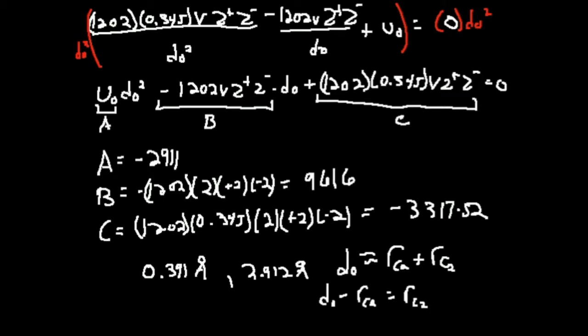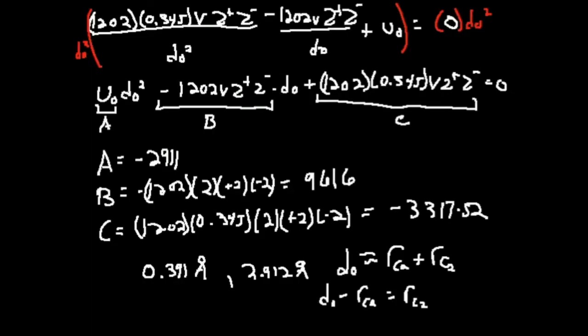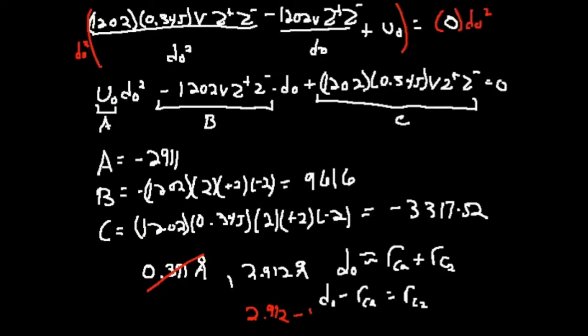Now, if my D0 was 0.391, I would be subtracting off 1.14, and I would get a negative value for this radius, which is impossible, which means that this is not a solution to this problem, meaning I'm going to use 2.912. So that means I'm going to take the thermodynamic radius, 2.912, and now subtract the radius of calcium 1.14, and that's going to give me my radius of C2. So 2.912 minus 1.14, and I get that this is about 1.772 angstroms, and that's my radius of the C2. And you'll know which one is not a solution, because one of them is always going to be smaller than the radius of one of the ions. So pretty much that means you're always going to use the bigger one.